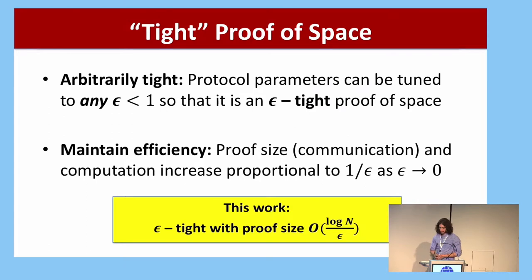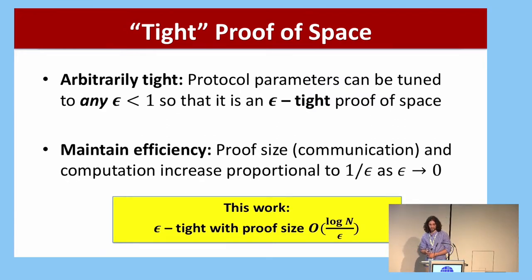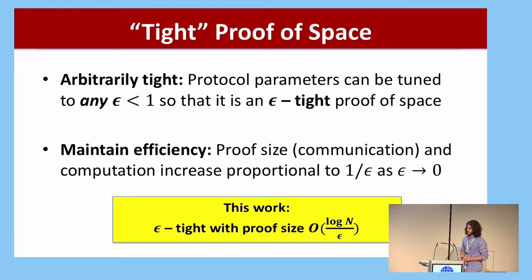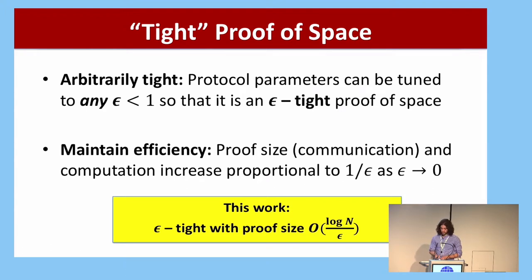Intuitively, the reason 1/ε seems like the best we can do is that in at least the information-theoretic versions of the online challenges, the prover has to store some large string and if it forgets too much of that string, the verifier's challenges will catch it on the errors — the parts of the space it forgot. If it only forgot 1% of the space, the probability that the verifier's challenges will locate that area is only good enough if the number of challenges is on the order of 1/ε, or λ/ε. In this work, we achieve ε-tightness with proof size seemingly close to optimal: order of log n / ε.